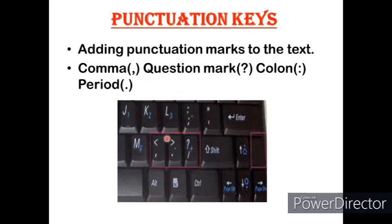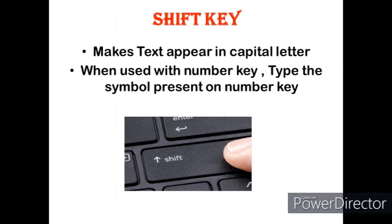Look at this keyboard — some buttons contain two symbols. For example, one button contains the less-than symbol and the comma symbol. When you simply press the button, a comma is printed. But if you want to type the less-than symbol, you have to use the Shift key — press that button together with Shift, and it will print the less-than symbol.